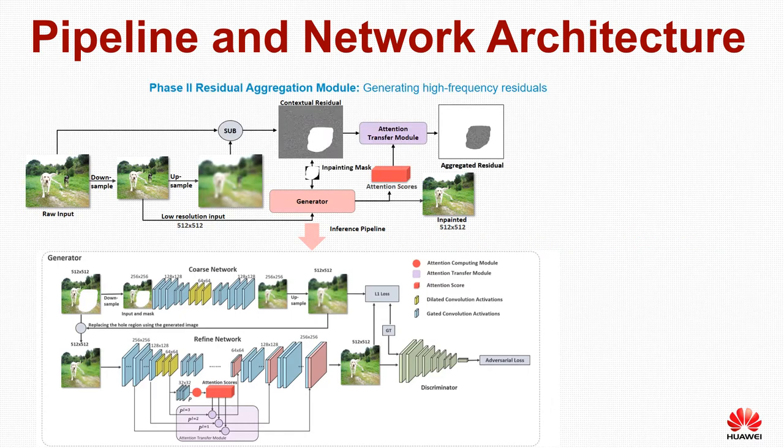In phase 2, we subtract the raw input image with its blurred version to get a contextual residue map. We then aggregate the contextual residues to obtain the residues for the hole region.